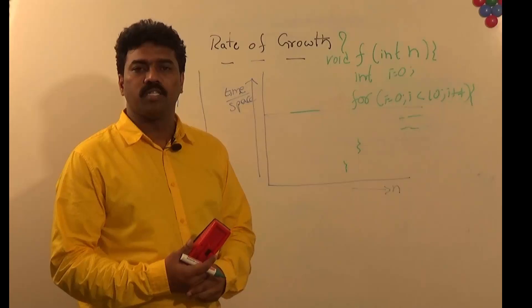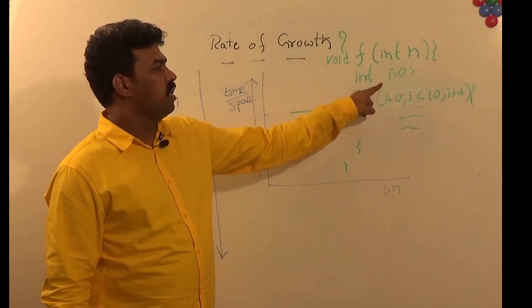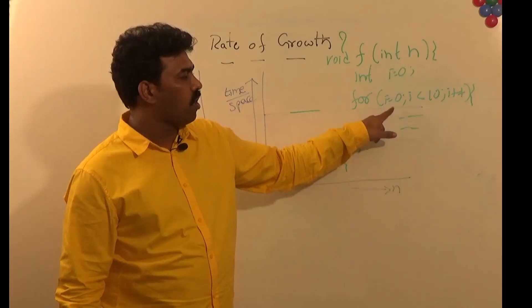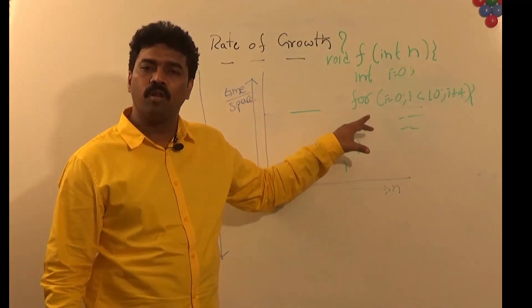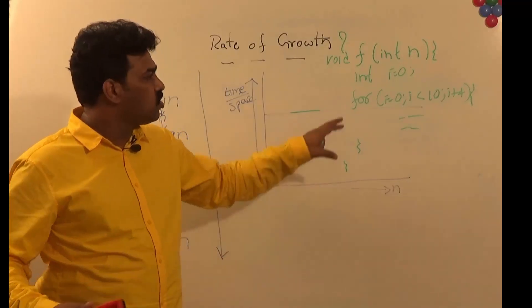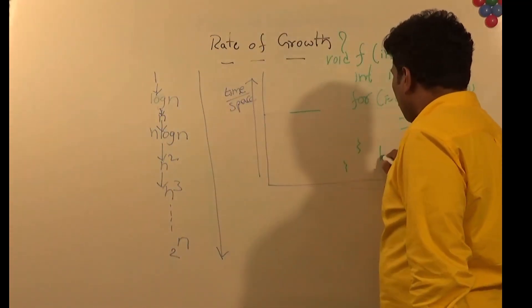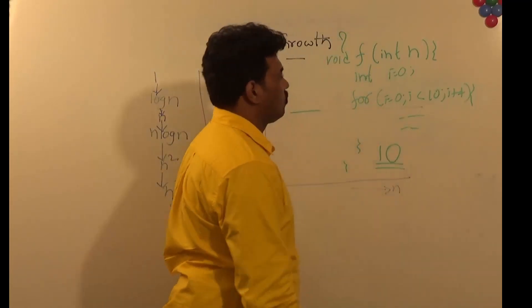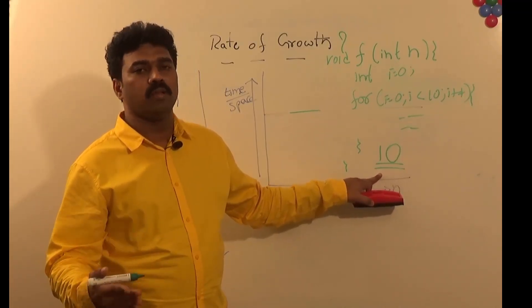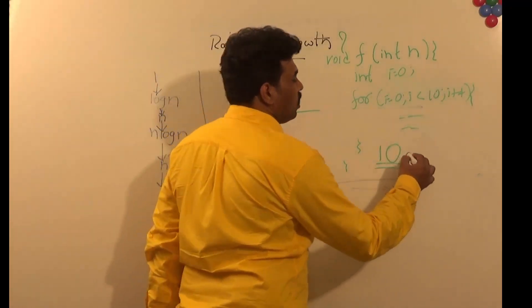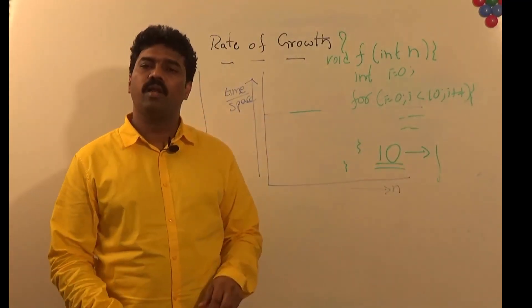As an example, consider this simple function. The parameter n is the input size, but looking at the function code, there is an initialization equal to 0, and a simple for loop iterating from 0 to 9 — that means 10 times. So irrespective of the input size, we are always executing the for loop only 10 times. There is no change in running time or space, so the rate of growth is 10. Whatever the constant — 10, 20, or 100 — as long as it does not vary with n, the rate of growth is 1.